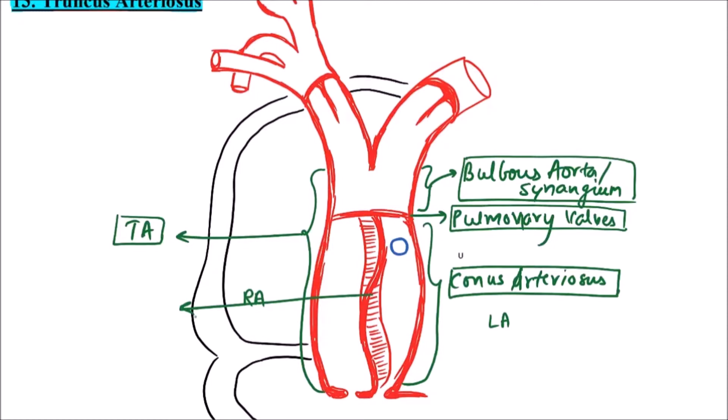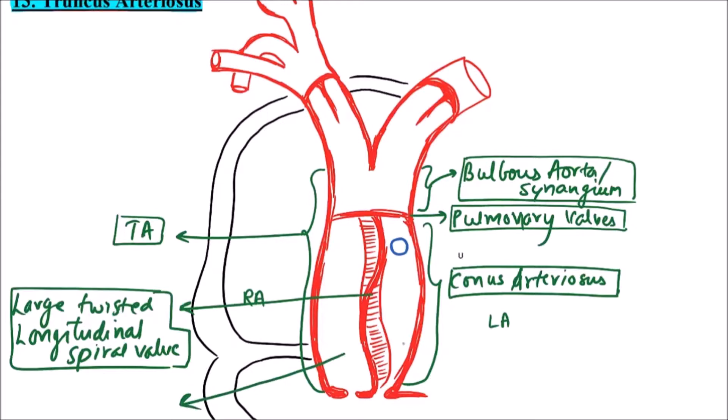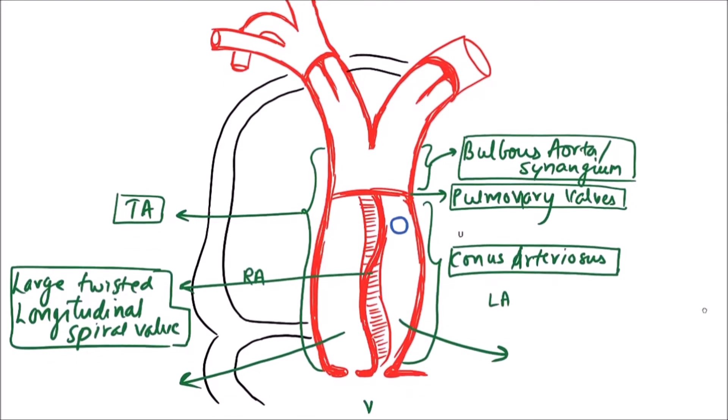This is large twisted longitudinal spiral valve. This large twisted longitudinal spiral valve further divides the cavity of conus arteriosus into two regions. First one is this part and second one is this part.